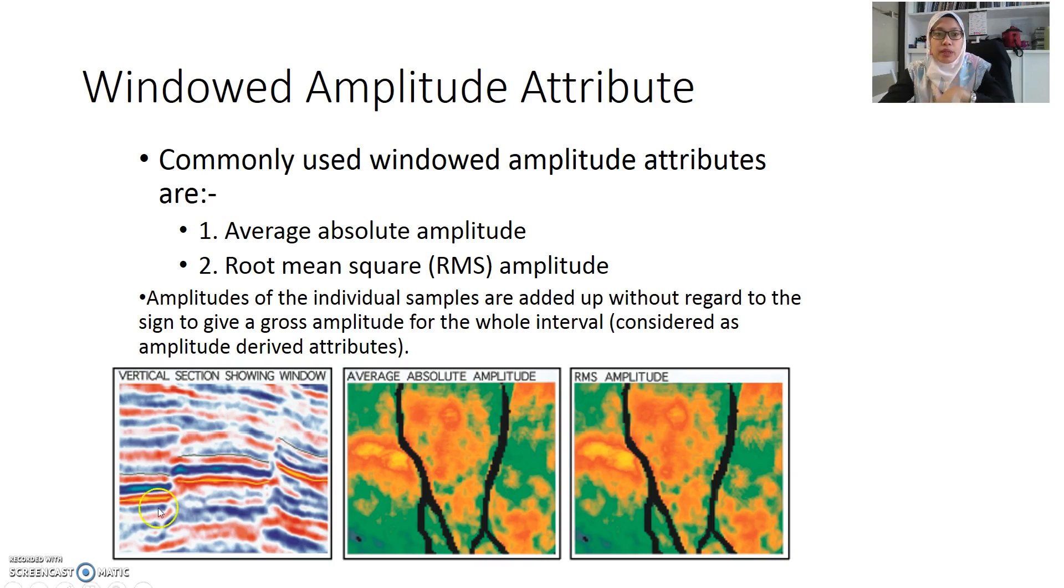Examples of window amplitude. You have a DHI, direct hydrocarbon indicator in this zone. So you pick two horizons and you compare in between two different amplitudes, which is average absolute amplitude and root mean square amplitude. They look the same because they basically work based on the peak of your wiggles, peak of your samples.